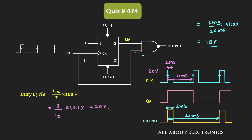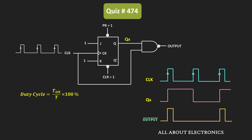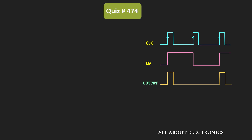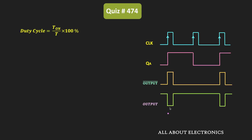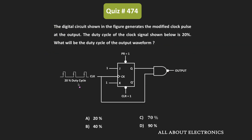Instead of the AND gate, we have a NAND gate. The output of this NAND gate will be exactly opposite to the output bar, so the output of the NAND gate will look like this. The OFF time is equal to 10% while the ON time is equal to 90%. So the duty cycle of this output waveform is equal to 90%. For the given digital circuit, the duty cycle of the output waveform will be equal to 90%.